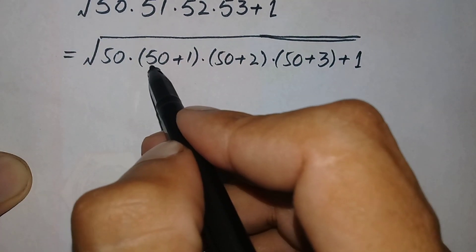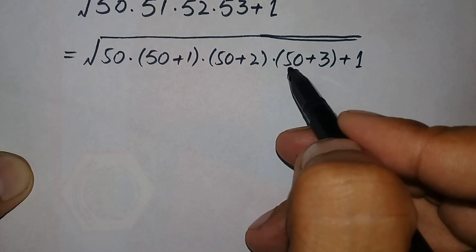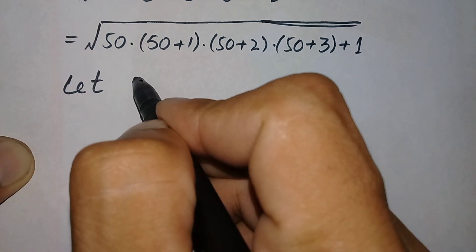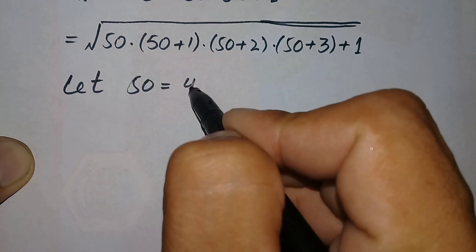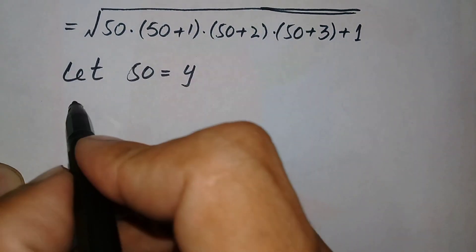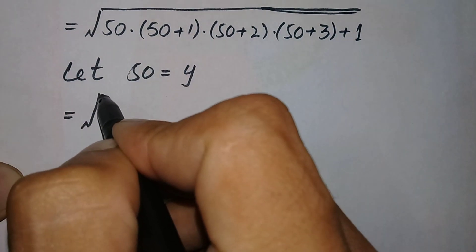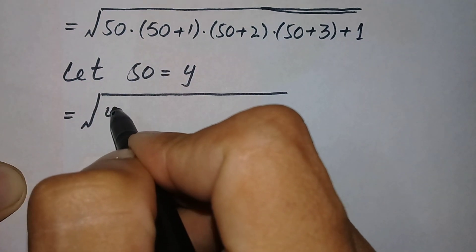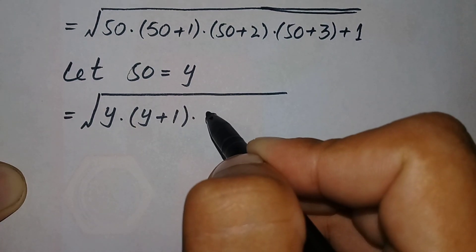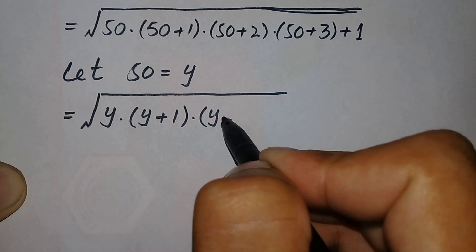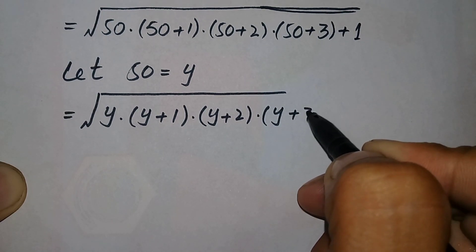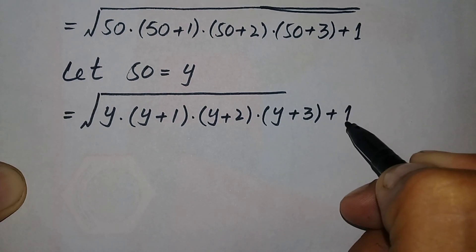Since 50 is present in every term, let us suppose 50 equals y. We replace 50 with y, so the equation becomes the square root of y times (y plus 1) times (y plus 2) times (y plus 3), plus 1.